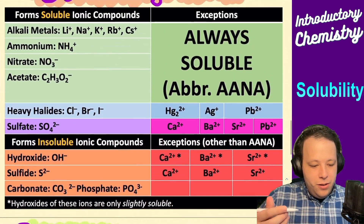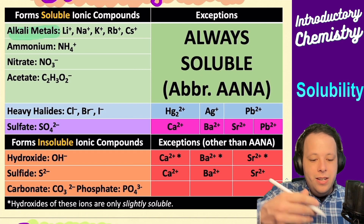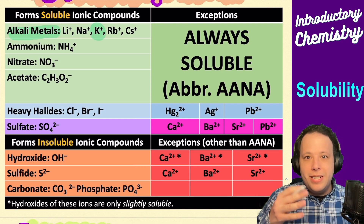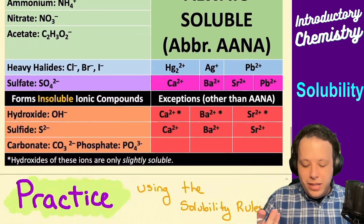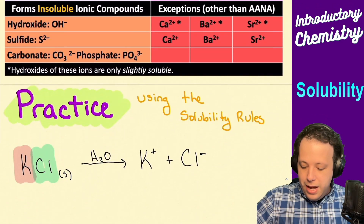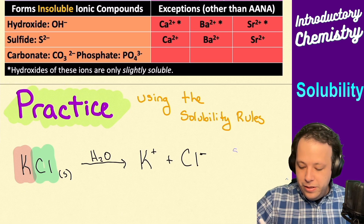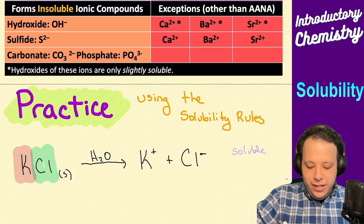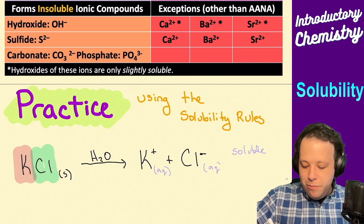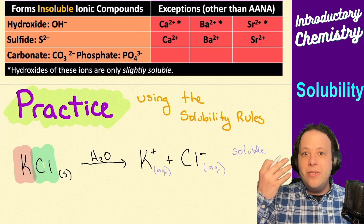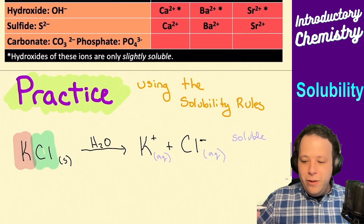We can see that alkali metals are always soluble, and K+ is right there on the chart. That tells you yes, this is soluble. We illustrate that by putting (aq) next to both ions, confirming this reaction is soluble.